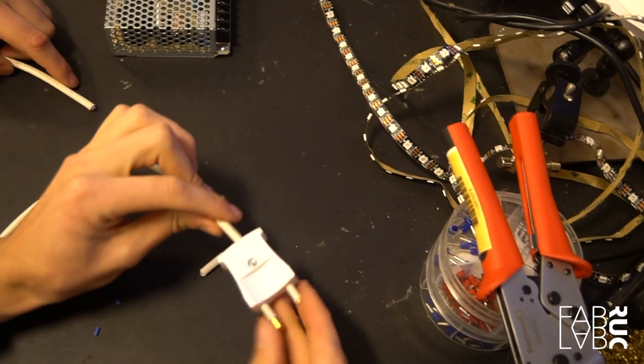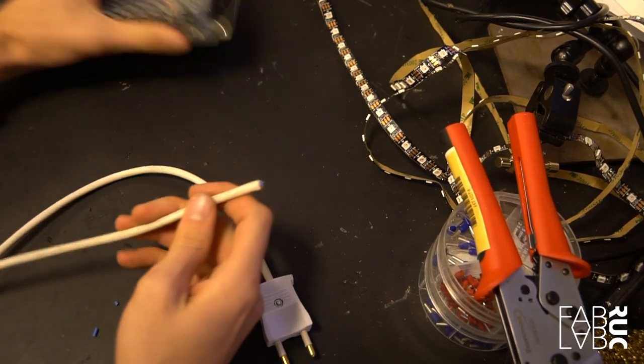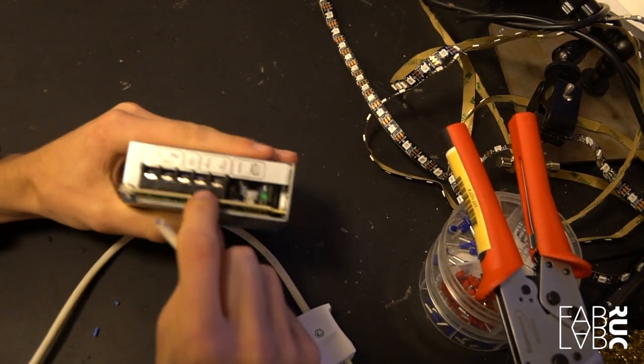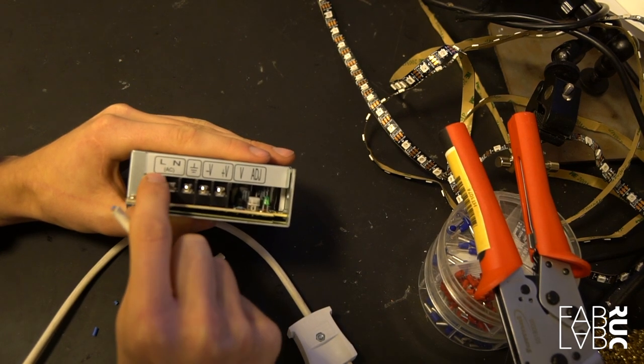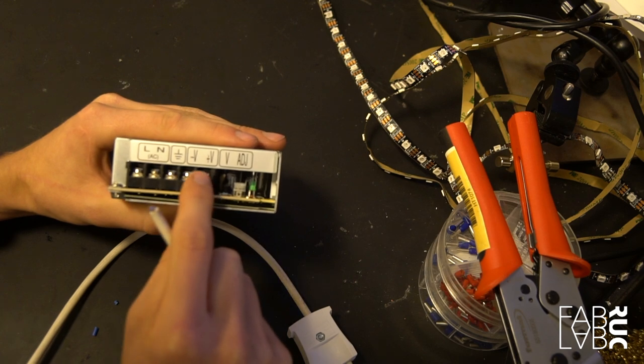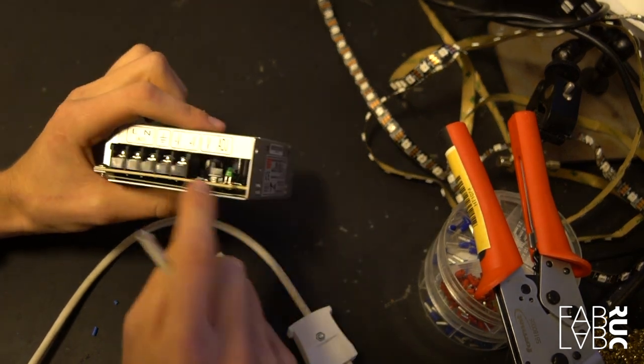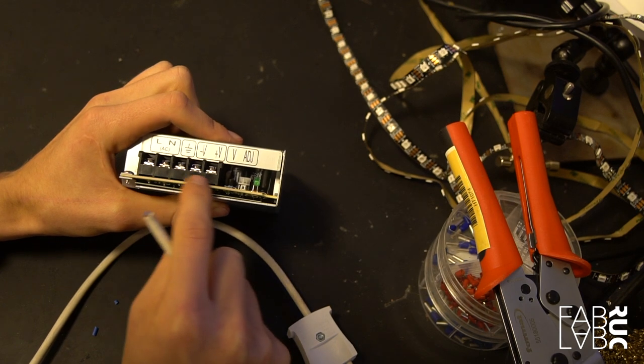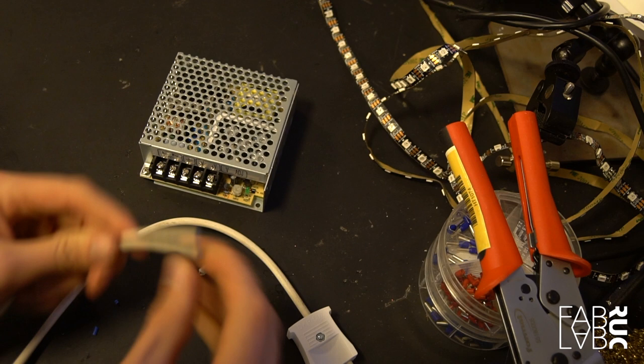So now having attached the plug, we of course have to get the other end attached to the power supply. This has AC in, and then it has the output terminals here for 5 volts. So this is where we will attach your Arduino and your Neopixel strips.